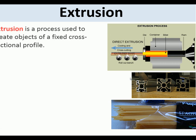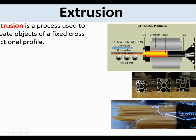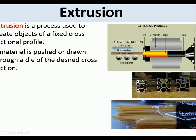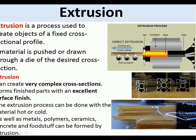Extrusion is a process to create objects of fixed cross-sectional profile. The material is pushed or drawn through a die of the desired cross-section, allowing very complex cross-sections and a very good surface finish. A huge force is applied to the material — which can be metal — pushing it through the die, which is a piece of hardened steel with a hole in it, forming the extruded shape.